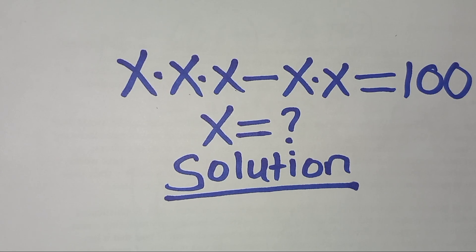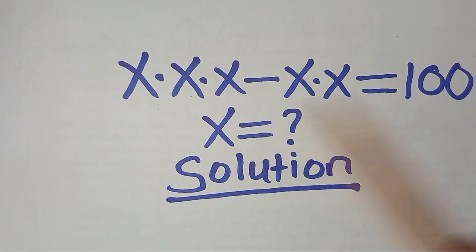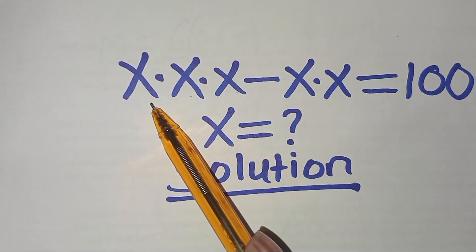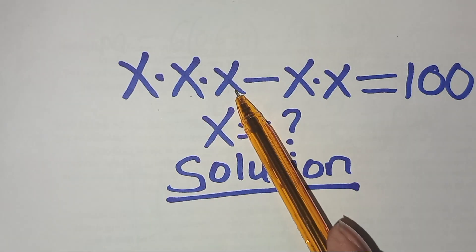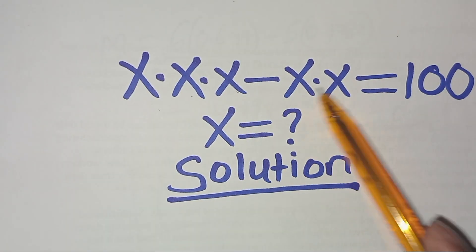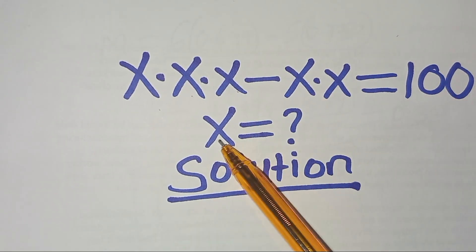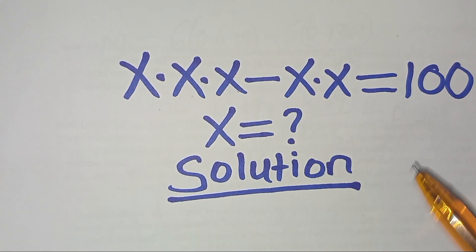Hello everyone, welcome to this solution for an algebra problem, which is x times x times x, subtract x times x, this is equal to 100. So what is the value of x?